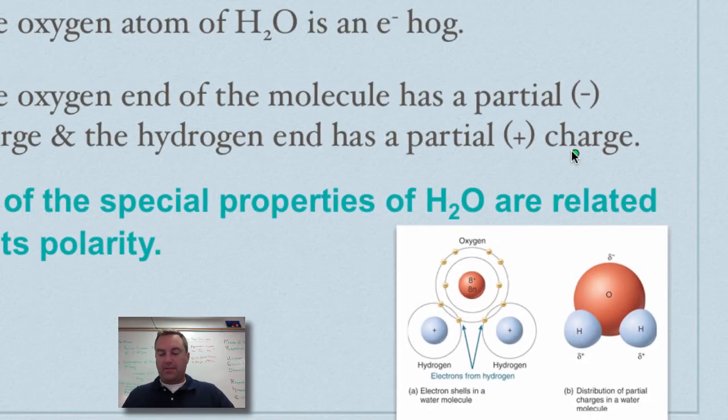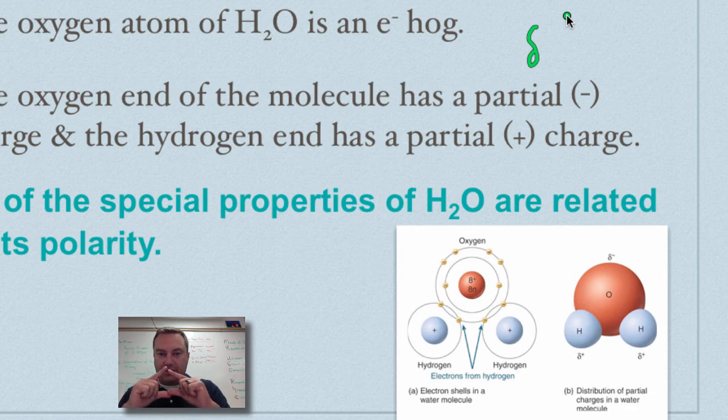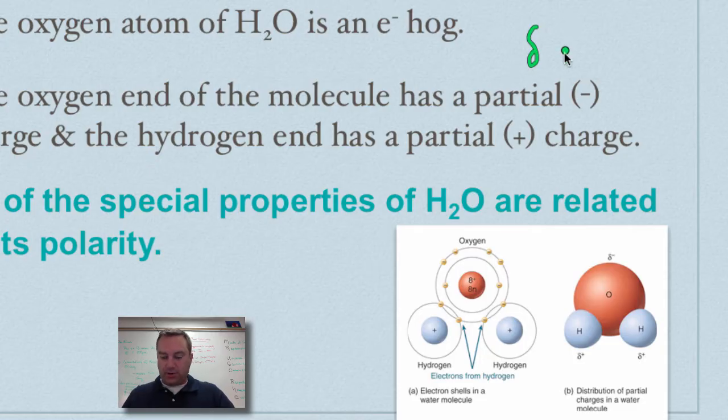Now, the oxygen end of the molecule doesn't get to hog the electrons all the time, just most of the time. And that will give it a partial negative charge. Now, we're going to use this symbol for partial. And this is actually from the Greek alphabet. This is a lowercase delta. A capital delta is a triangle. Think of the letter D. So this is a lowercase d. And it simply means partial. So this will be a partial negative. Now, hydrogen, on the other hand, it doesn't have the electrons all the time. So it has a partial positive charge.